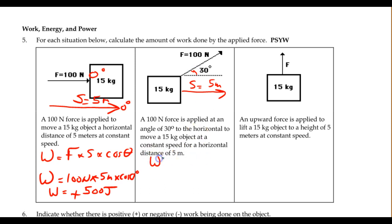So calculating the work, it's 100 newtons again, same force, and I'm going to multiply that by 5 meters again, same displacement, but now it's the cosine of 30 degrees.